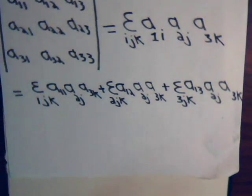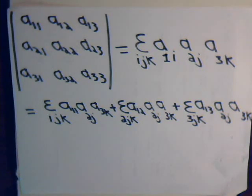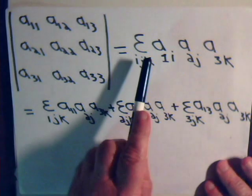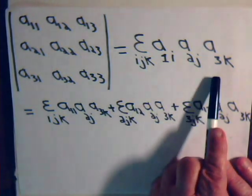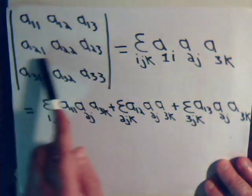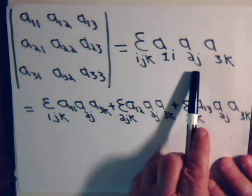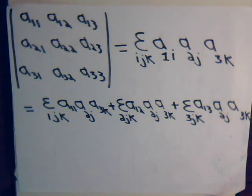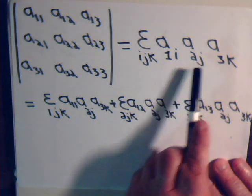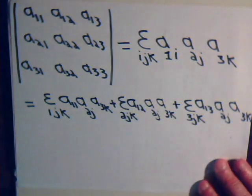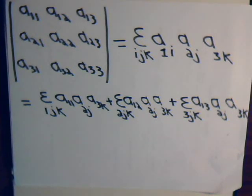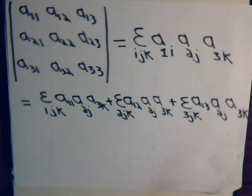We're going to prove that the determinant of this matrix can be expressed in this form: epsilon i, j, k times A1i, A2j, A3k. There are three rows here, and then i, j, k for the second numeral. Notice that each one of these indexes is repeated — i is repeated, j is repeated, k is repeated. As we explained in video number one, when you have repeated indexes, that means you're summing over those indexes, from values of one, two, and three.